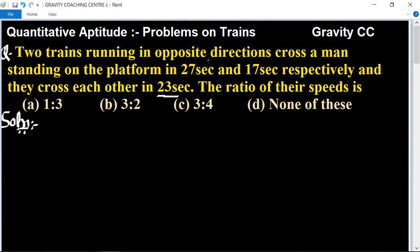In this question, two trains running in opposite directions cross the platform in 27 and 17 seconds, and they cross each other in 23 seconds. So find the ratio of their speeds.